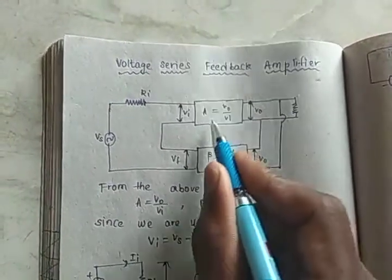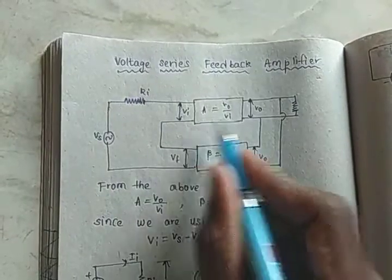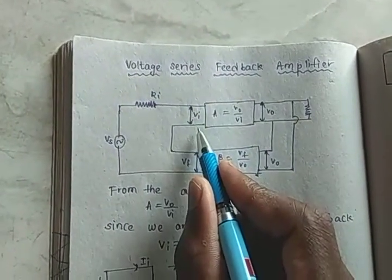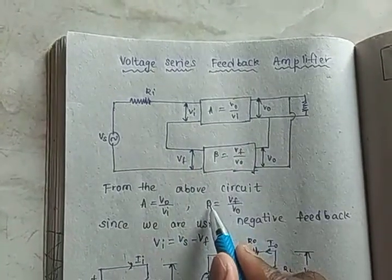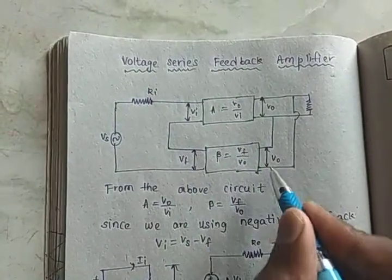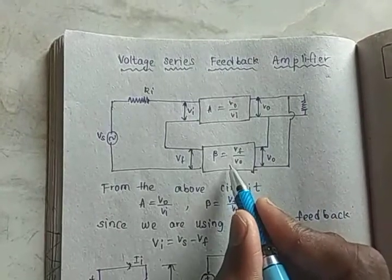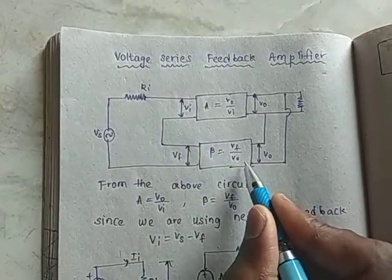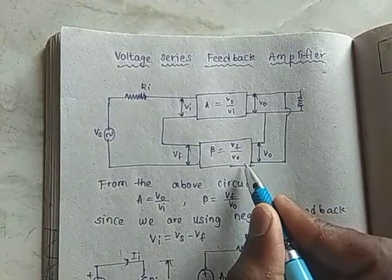From this circuit, we can write A is equal to V0 by VI, since V0 is the output of the amplifier and VI is the input of the amplifier. And beta, the feedback ratio, is equal to Vf by V0. The feedback network is getting an output of Vf and it's taking an input of V0.